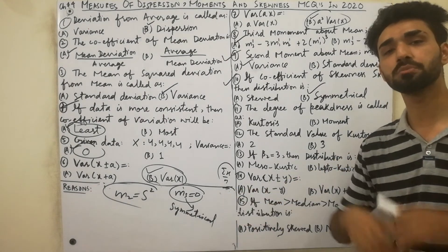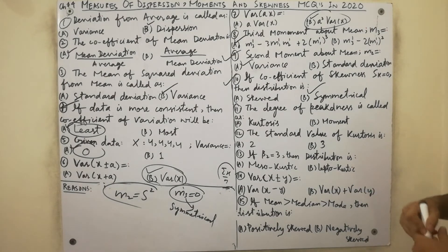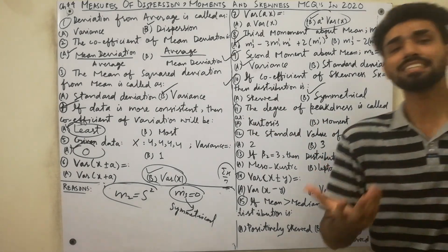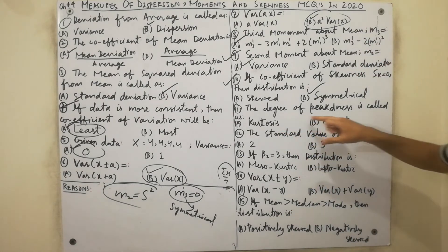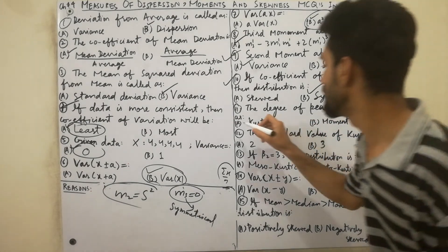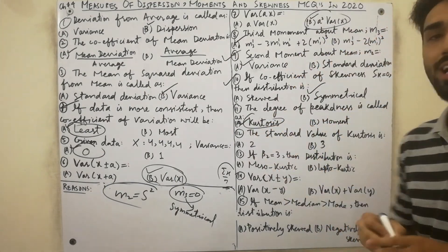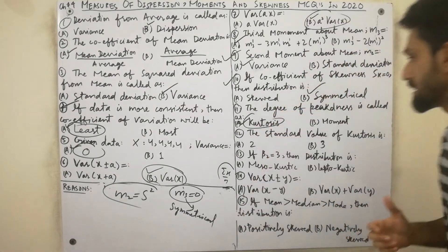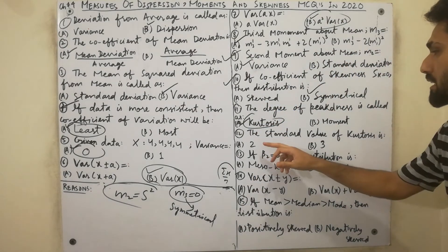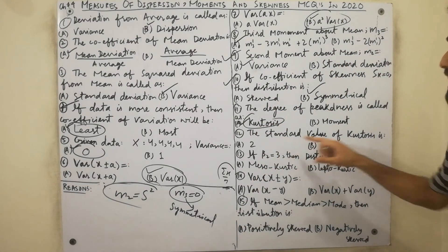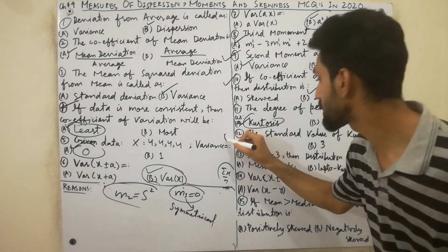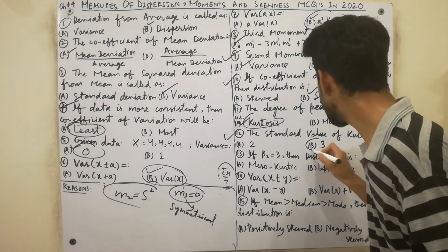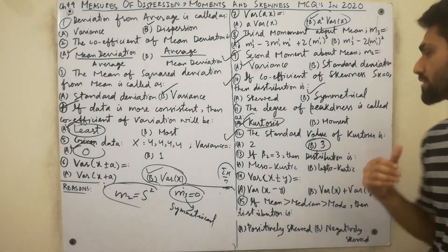MCQ eleven: the degree of peakness of a distribution is called kurtosis. MCQ twelve: the standard value of kurtosis is always 3. Must remember — the standard value of kurtosis is always 3.